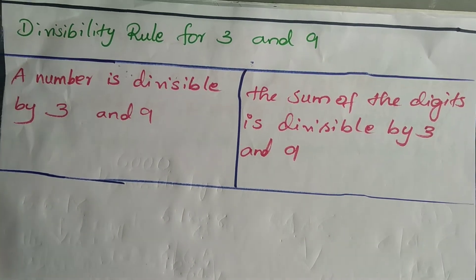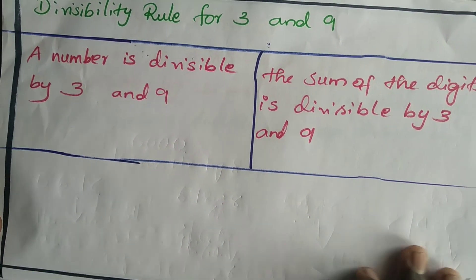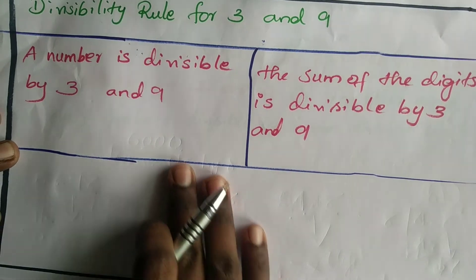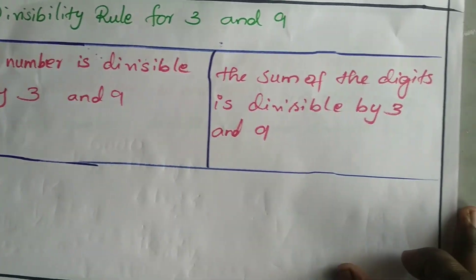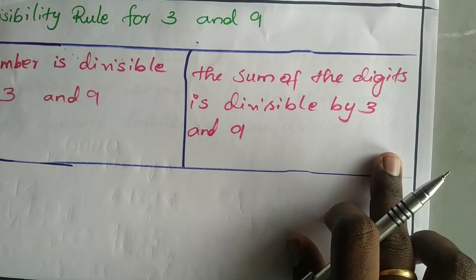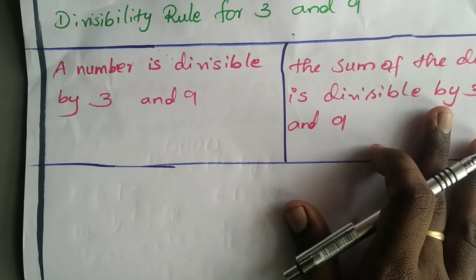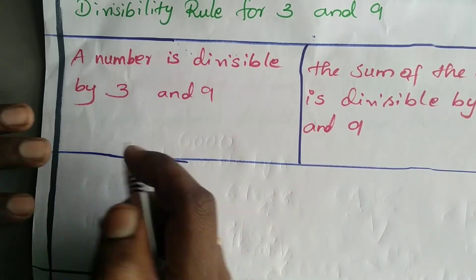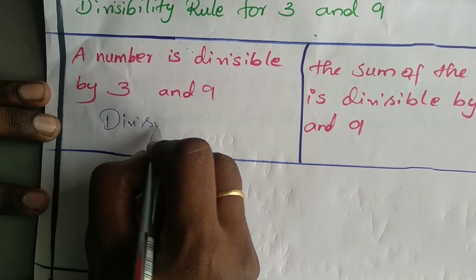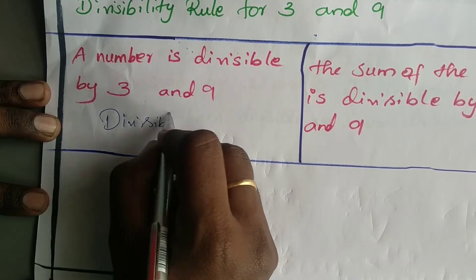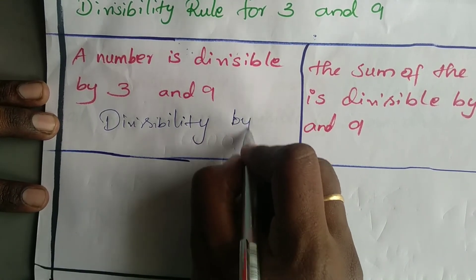Let's move on to the divisibility rule for 3 and 9. A number is divisible by 3 and 9 if the sum of its digits is divisible by 3 or 9, respectively. This is very simple — let's see them one by one.